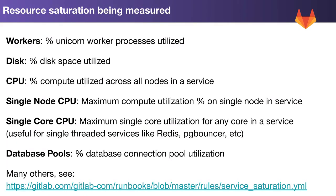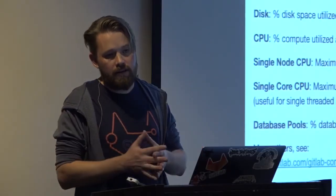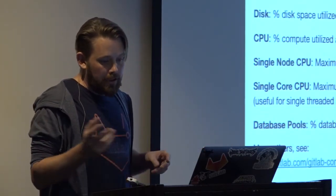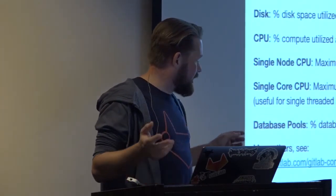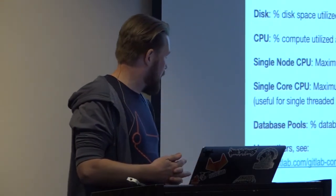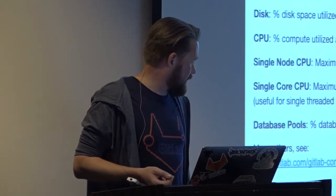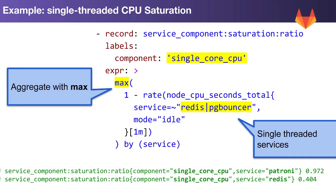The next thing we need to do in Prometheus is add a recording rule for each of these resources we're tracking. Some examples we're currently tracking on GitLab.com include Unicorn workers, percentage disk utilized, CPU, single node CPU which tracks hotspots within a particular cluster, and database pool sizes — are we running out of pgbouncer slots? We have many others, and most of them are recorded at that link.